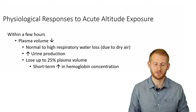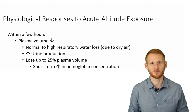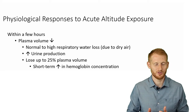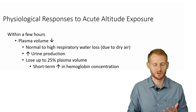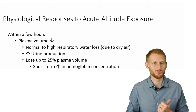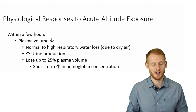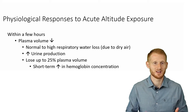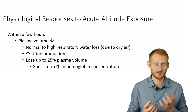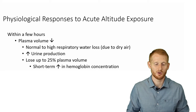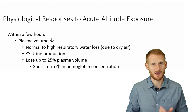In the first few hours at altitude, we're going to have a decrease in plasma volume — the liquid portion of our blood — so total blood volume drops. This is due to the drier air at altitude and shifts happening within the body. We produce more urine when we first go up, losing volume that way, and we have greater respiratory fluid loss because of that dry air.